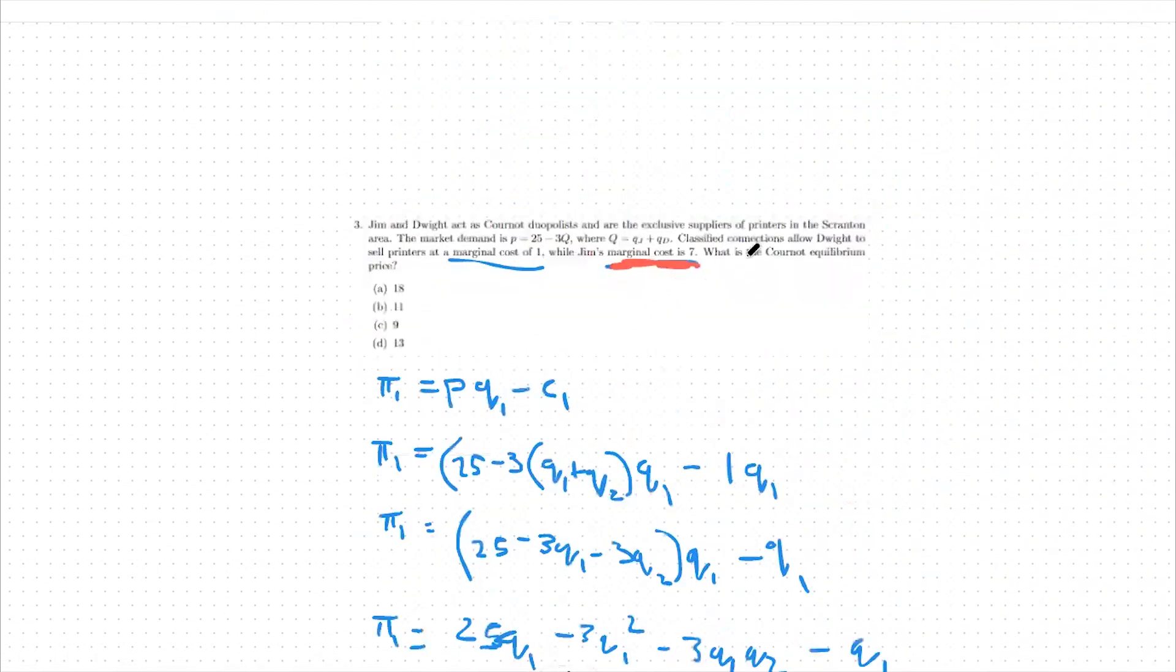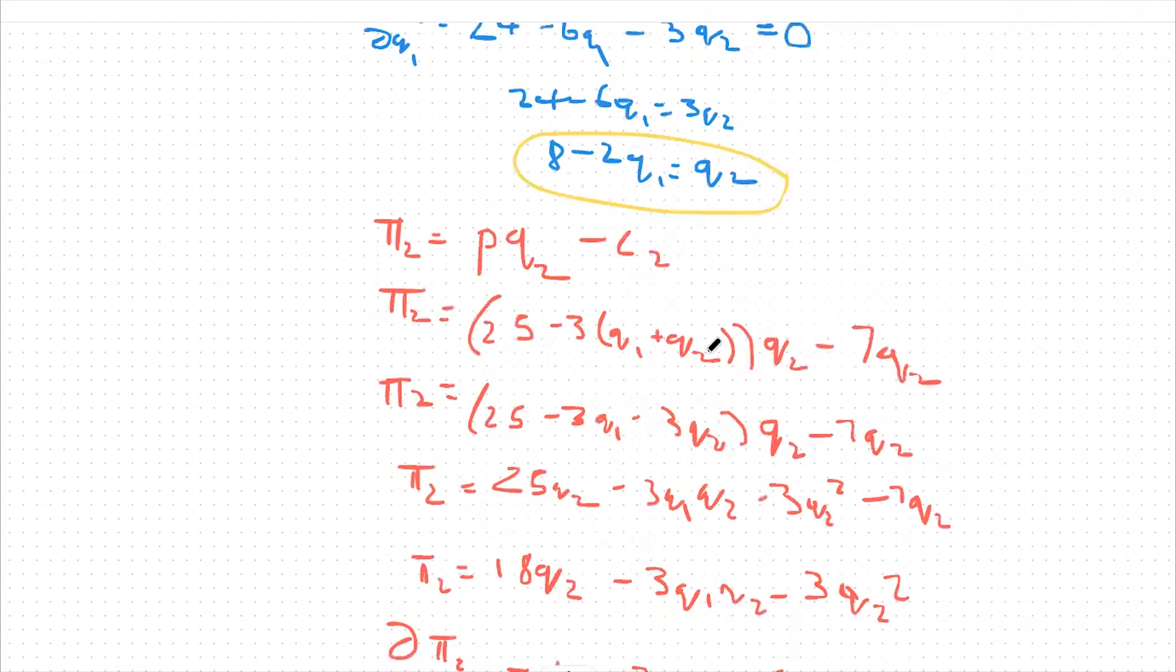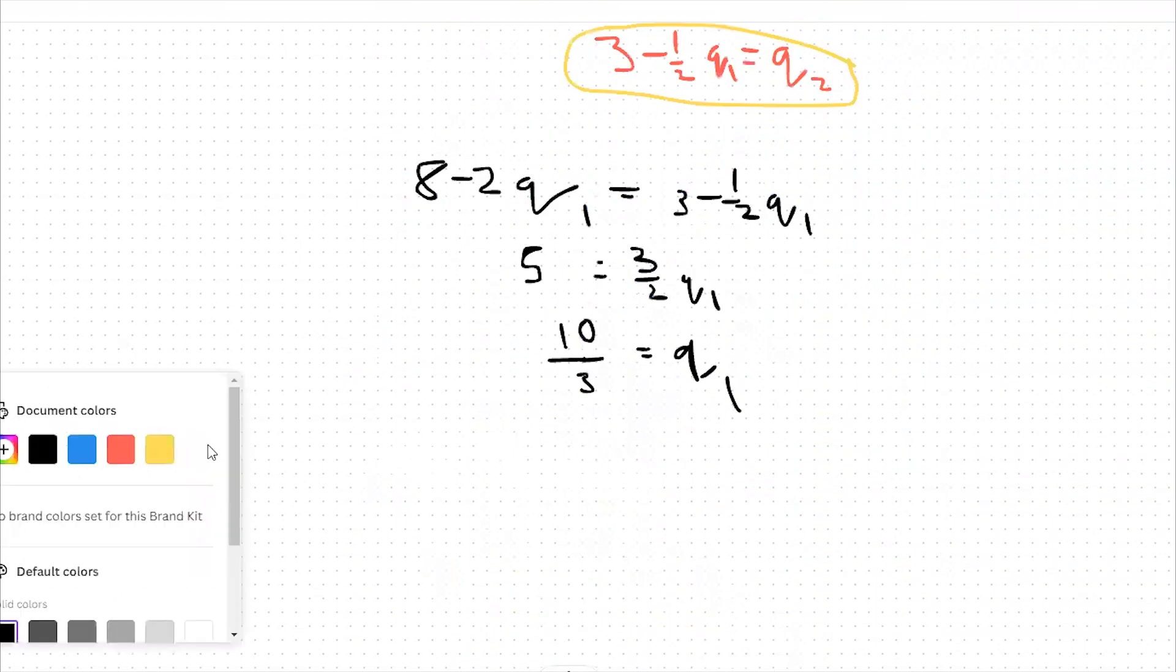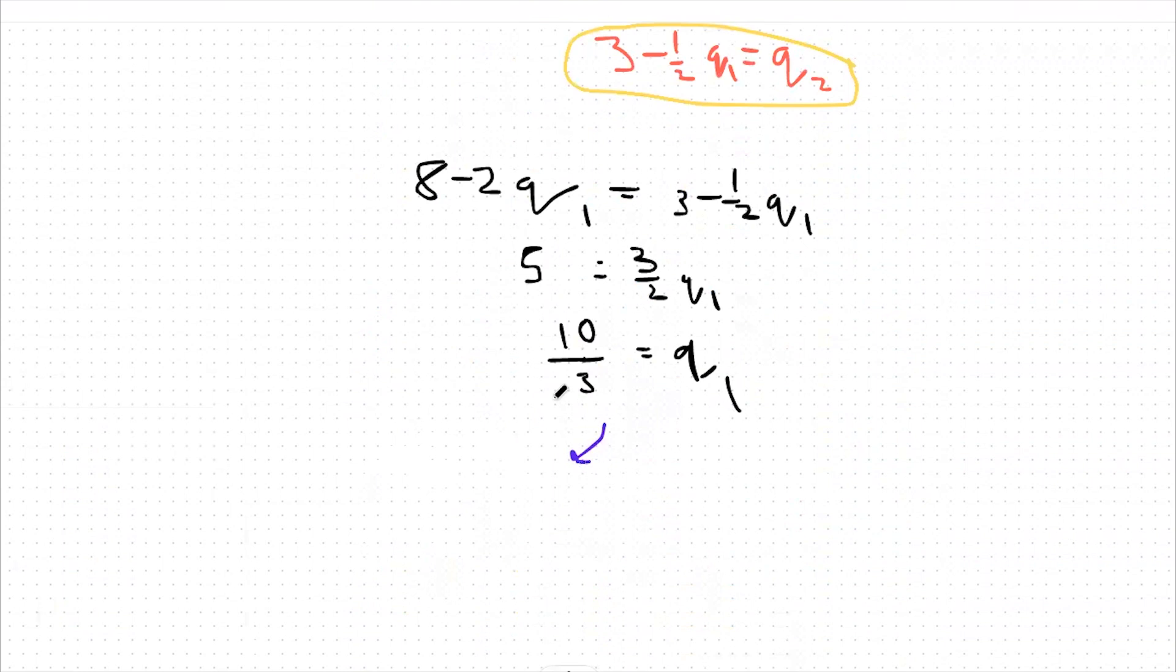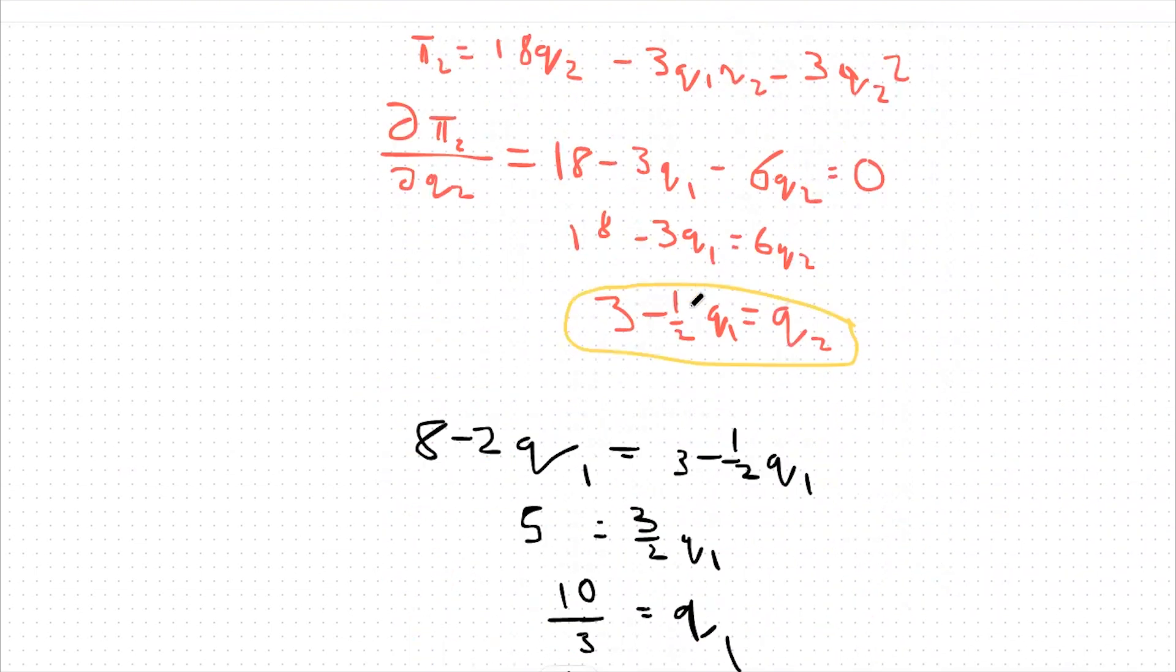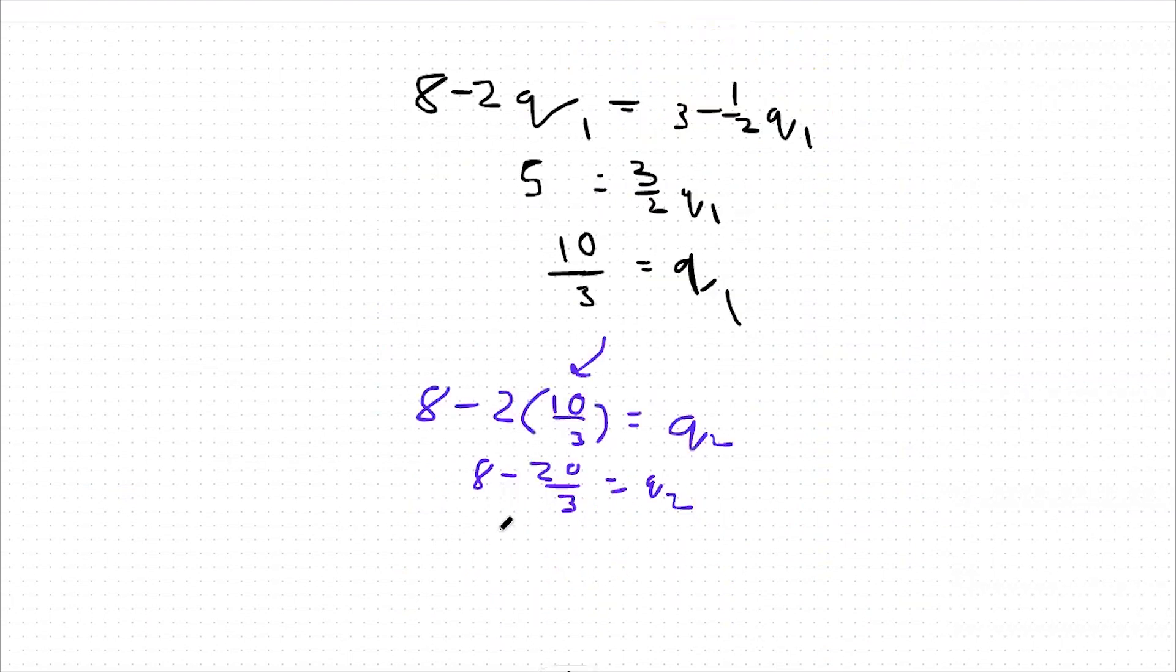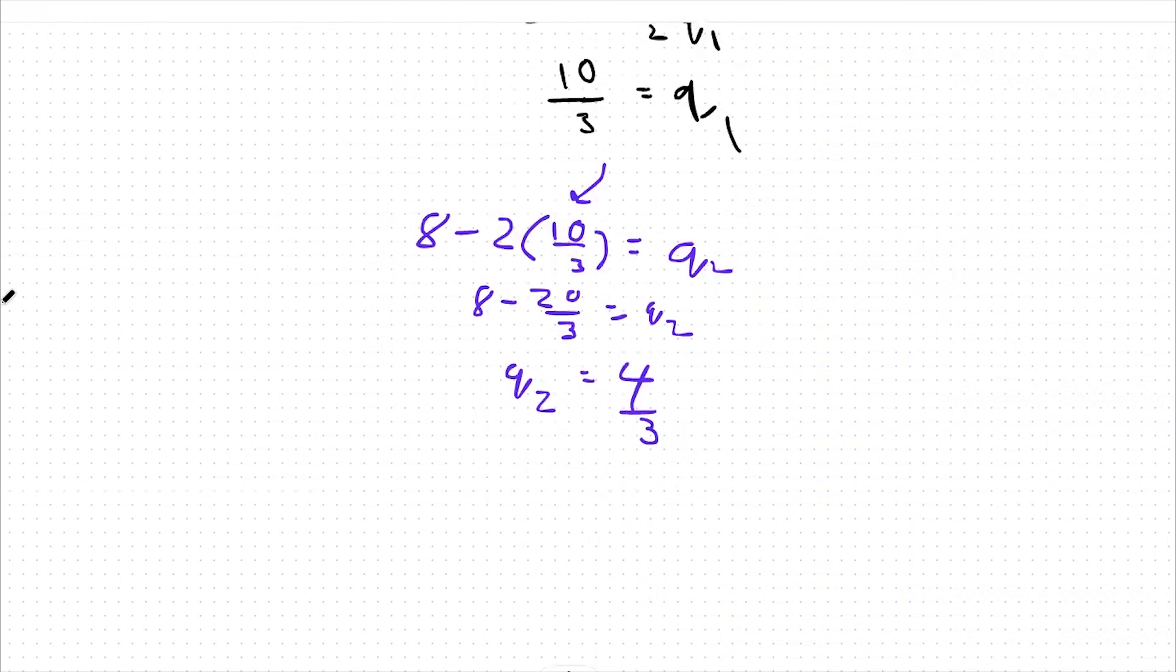What the question is asking for is specifically the Cournot equilibrium price. We have an equation for our price here, which is p equals 25 minus 3q, and we know our q to be q1 plus q2. So I'm just going to solve for q2 now. I'm going to take my result for q1. I'm going to plug that into this equation up here, 8 minus 2q1 equals q2. You can use either of the equations circled in yellow. Both will work. So let's say 8 minus 2 times 10 over 3 equals q2, which means 8 minus 20 over 3 equals q2. So we have that q2 is equal to 4 thirds. So we have q1 equaling 10 thirds, q2 equaling 4 thirds.